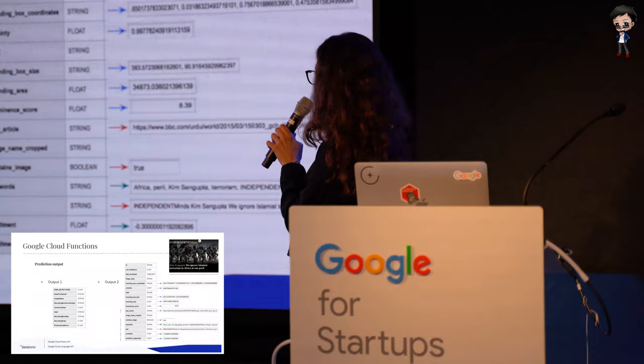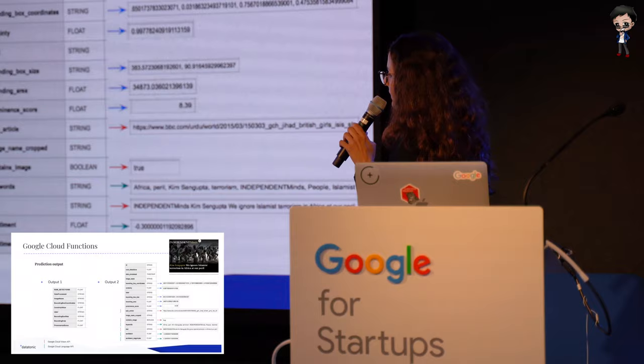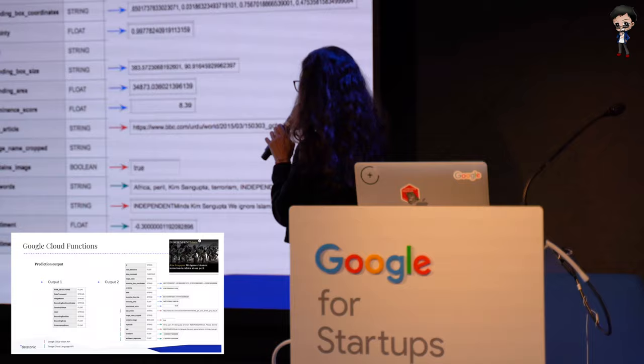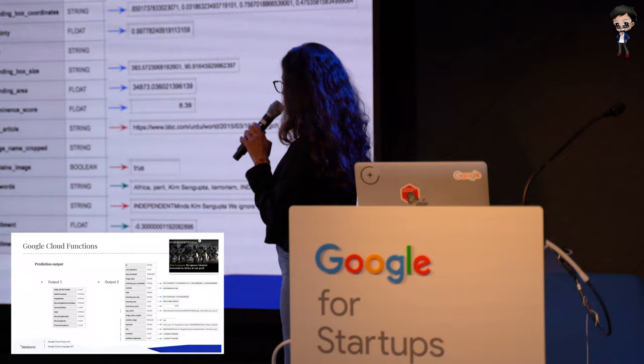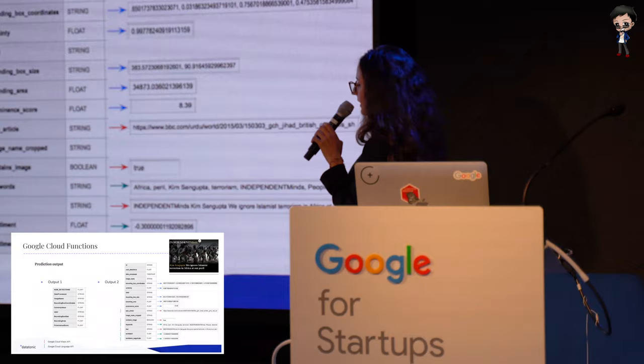For the story image itself, the Vision API extracts all the text from it. Of course, it also picks up noisy text like navigation links, but that requires some post-processing afterwards. Then from it you can call the Language API, which extracts keywords — pretty much all the adjectives and nouns in the text. Then you're also capable of extracting sentiment.